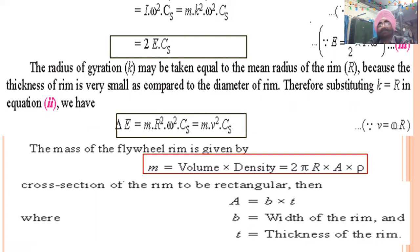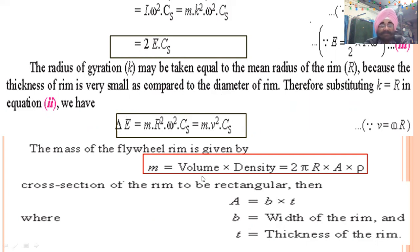The maximum fluctuation of energy formula can also be used to find the mass of the flywheel from its dimensions. If the flywheel is a ring, the volume is 2 pi r times cross-sectional area (b times t), and multiplying by density gives the mass. Given r, omega squared, and Cs, the mass m can be calculated.